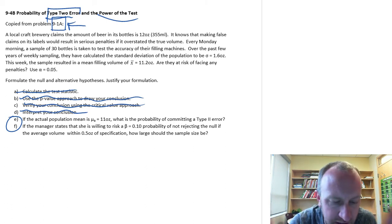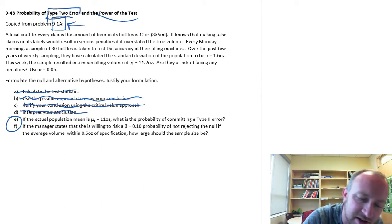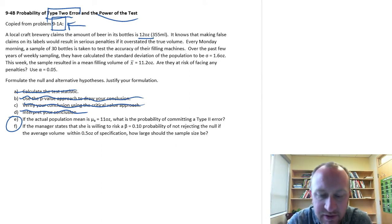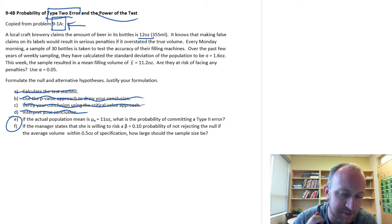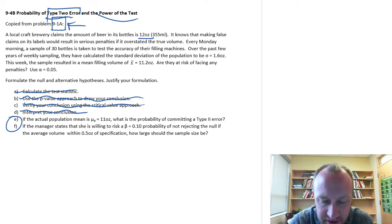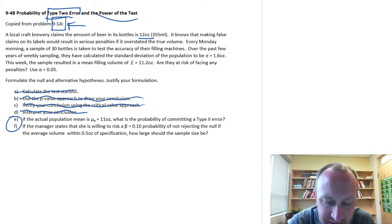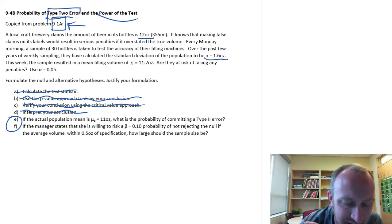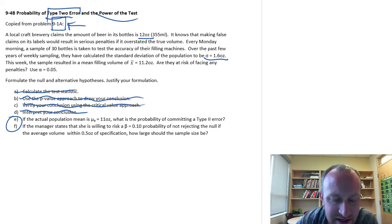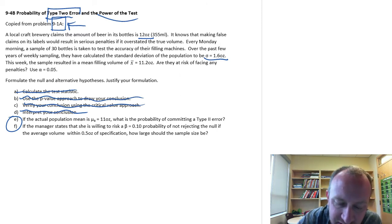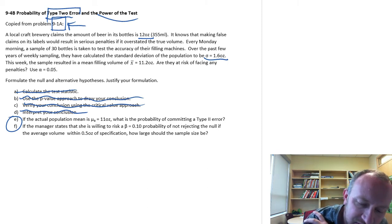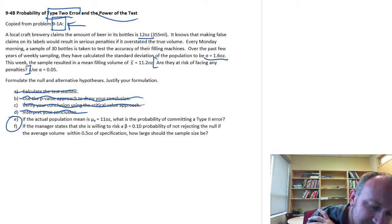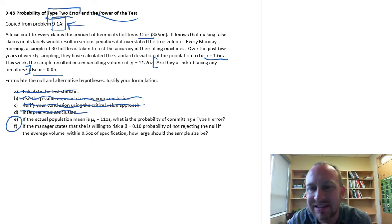We have a local craft brewery that claims the amount of beer in its bottles is 12 ounces. It knows that making false claims on its labels would result in serious penalties if it overstated the true volume. Every Monday morning, a sample of 30 bottles is taken to test the accuracy of their filling machines. Over the past few years, they've calculated the standard deviation of the population to be 1.6 ounces. This week, the sample resulted in a mean filling weight of 11.2. Are they at risk of facing penalties? And here's our level of significance.